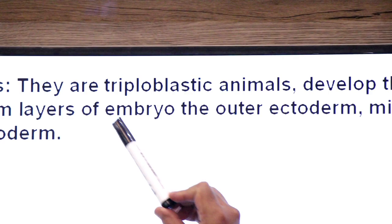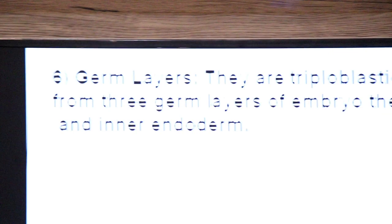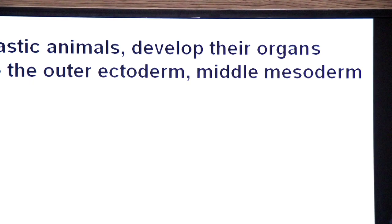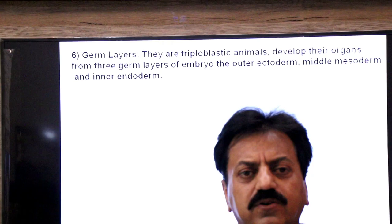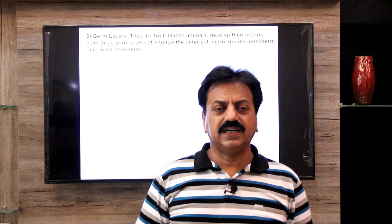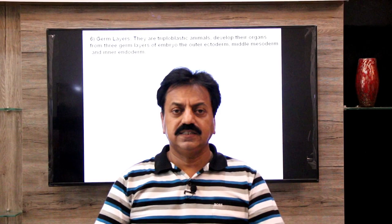Now we will study their germ layers. Dear students, they are triploblastic. Triploblastic animals develop their organs from three germ layers of embryo: the outer ectoderm, middle mesoderm, and inner endoderm. Their embryo has 3 layers and from these different organs develop.